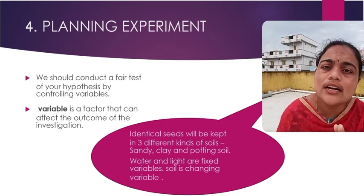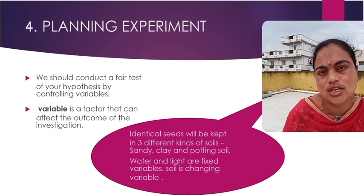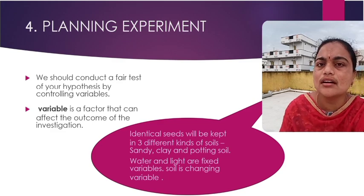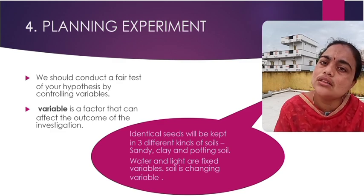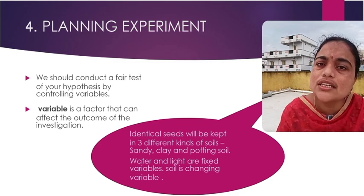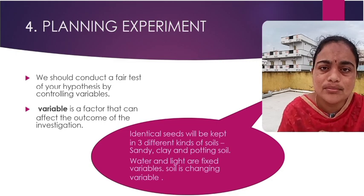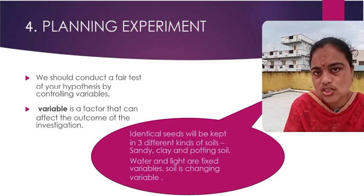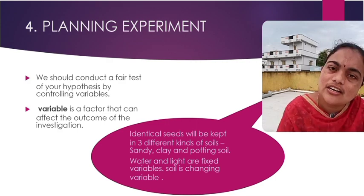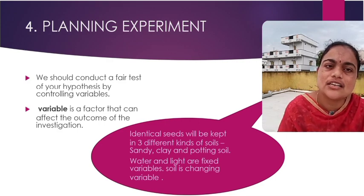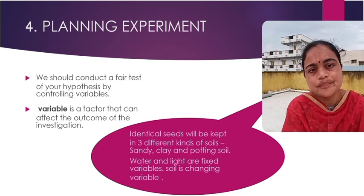Water and light are fixed variables — they cannot be changed and are provided equally to all bean seeds. The changing variable is the soil: in one case sandy, in another clay, and in another potting soil. We should conduct a fair test for our hypothesis.